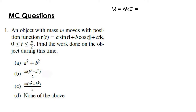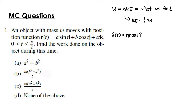We know that kinetic energy is ½mv². So we need to find the velocity vector first. The derivative of the position function is the velocity vector. The derivative of a sin(t) is a cos(t) i; derivative of b cos(t) is −b sin(t) j; and derivative of ct is just c, times k.